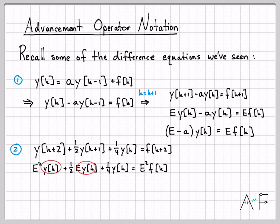Again, notice all the common terms that I have here. I have all these y of k's, which I can factor out, and then rewrite as just the factors. E squared plus 1 half e plus 1 fourth y of k equals, and again, I could factor on the right, but there's only one term, so no factoring required. So those are two specific examples of rewriting a difference equation using this operator notation.